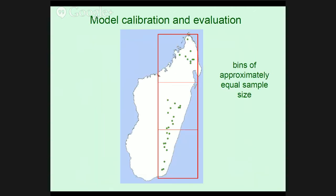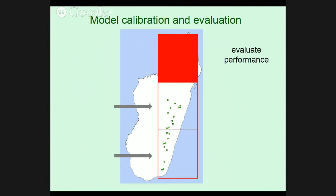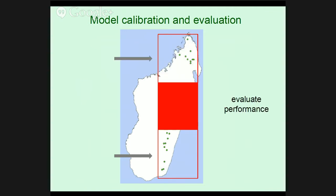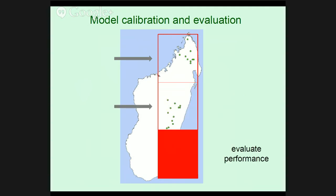What Rob did was divide his records spatially into three bins of approximately equal sample size, before and after filtering. He made a model with records from two bins with background just from those bins, then projected it to the third bin where he could evaluate the model's performance in predicting those withheld data in a region not involved at all in calibrating the model. He then switched things up, using a different pair of bins to make the model and evaluating it in the third, cycling through all three combinations. The filtering ended up having better evaluation statistics, both for omission rates and for AUC — the area under the curve of the ROC plot.